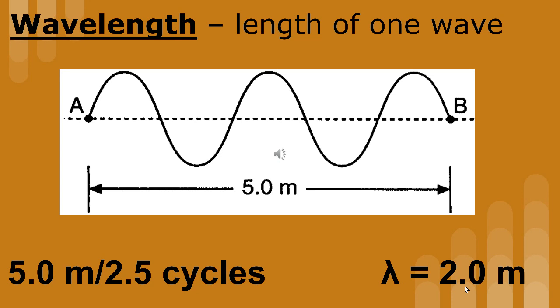To find the length of one wave, we take the five meters divided by the two and a half cycles, or two and a half waves, and we get that the wavelength is two meters.